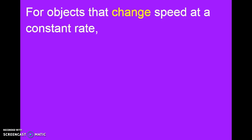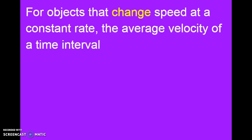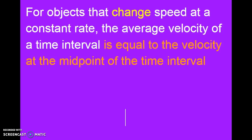For objects that change speed at a constant rate, the average velocity of a time interval is equal to the velocity at the midpoint of that time interval.